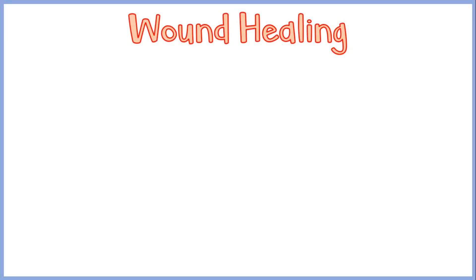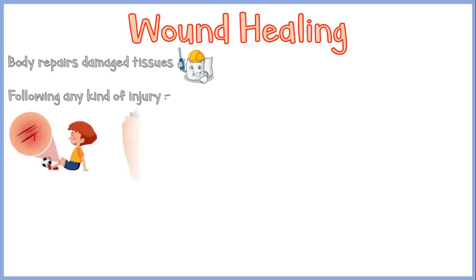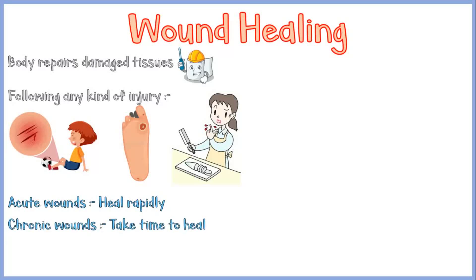Wound healing is the process where the body repairs damaged tissue following any type of injury, like skin abrasions, ulcers, cut injuries, etc. Acute wounds usually heal up rapidly, whereas chronic wounds take a longer time to heal, and sometimes even months.